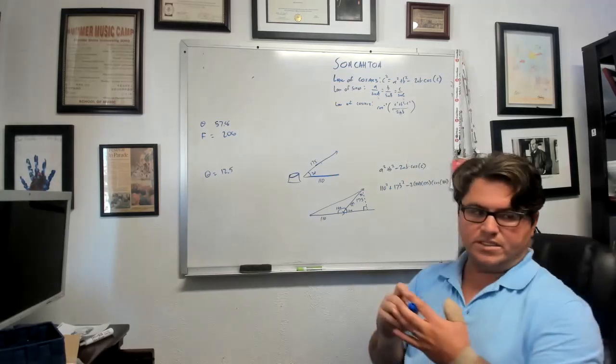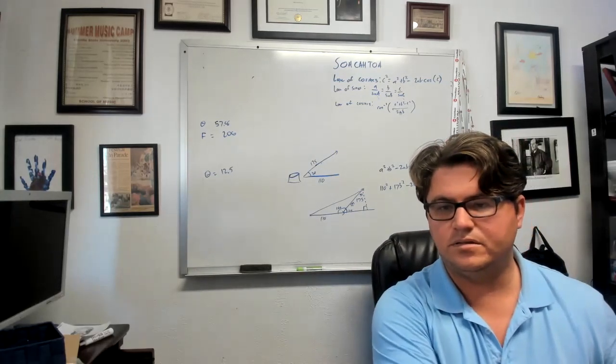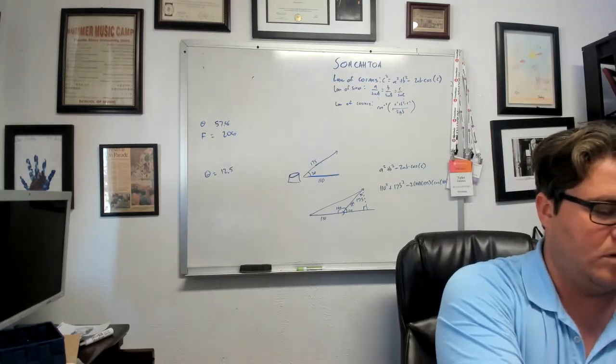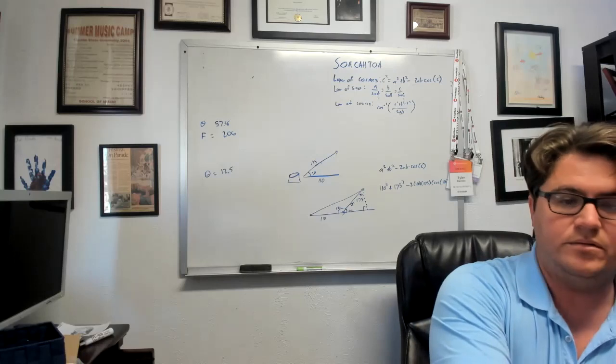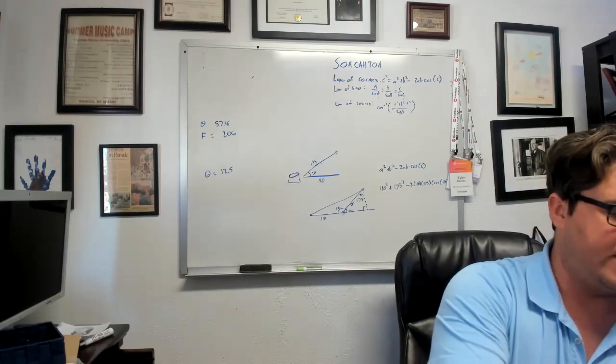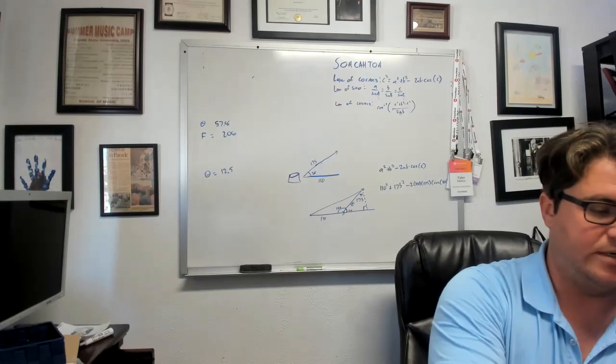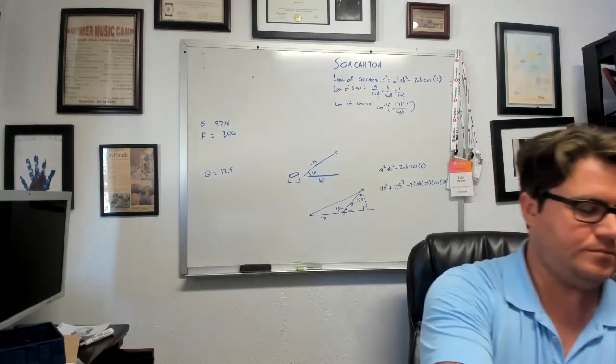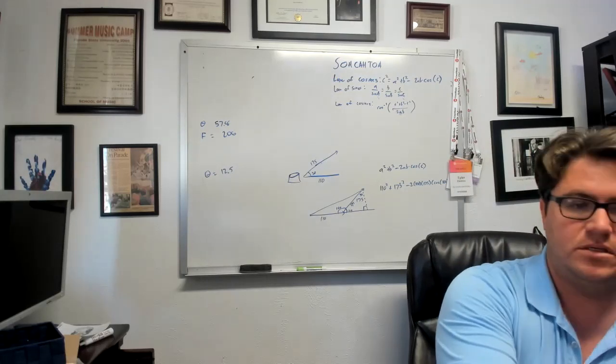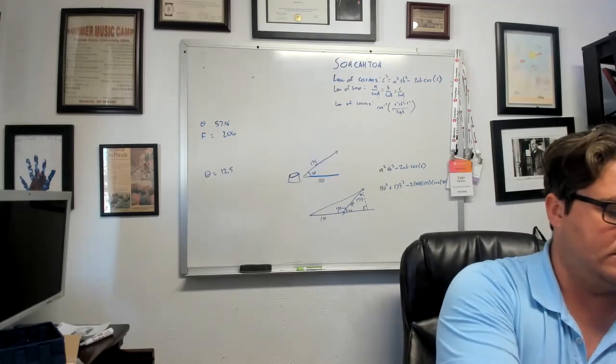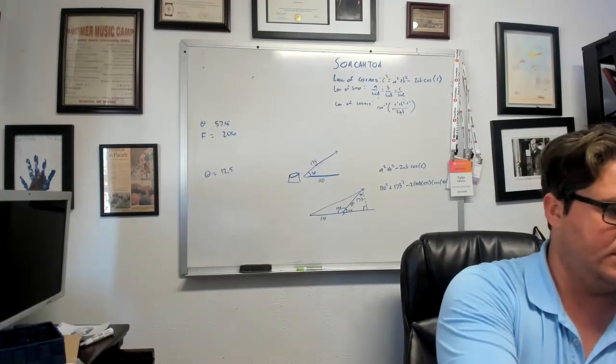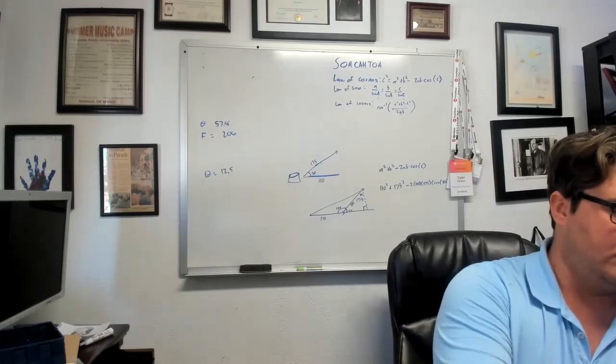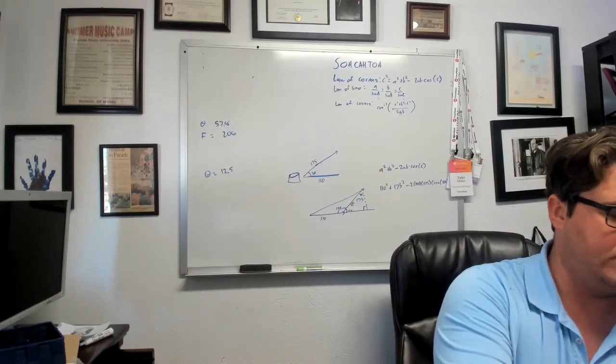And so let's plug this into our calculator. We'll get 110 squared plus 175 squared minus 2 times 110 times 175 times the cosine of 160.